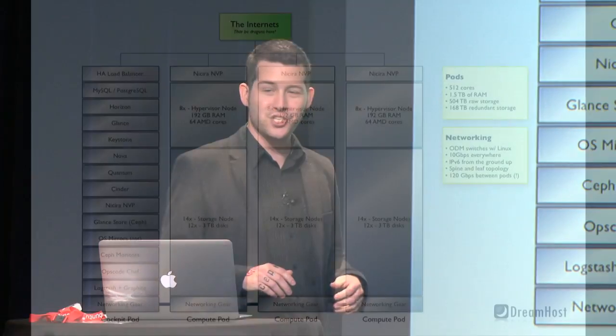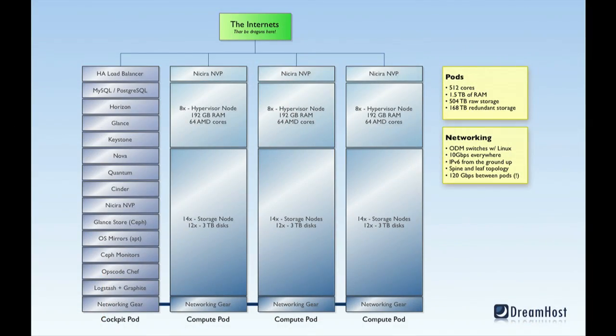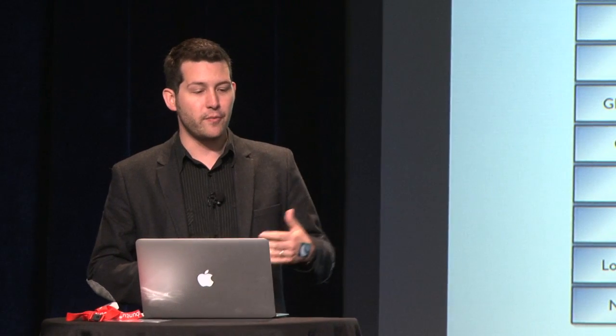This is the general architecture for DreamCompute. We have a pod architecture — each pod has about 512 cores, about 1.5 terabytes of RAM, and over 500 terabytes of raw storage. That storage is leveraged by Ceph with three copies of every piece of data, intelligently distributed and self-healing, giving us about 170 terabytes of redundant storage per pod. Pods have about 120 gigabits of network throughput via 10 gig everywhere, a Spine-and-Leaf network topology, and IPv6 from the ground up. Every instance you spin up in DreamCompute gets a v6 address.